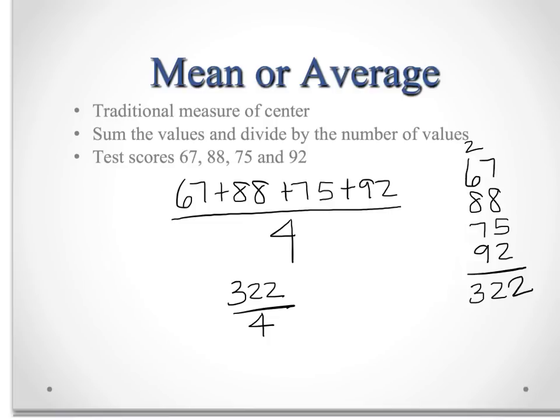When we add all of them up, we get 322. We divide that by 4, we get 80.5. So that's the average of these four test grades, 80.5.